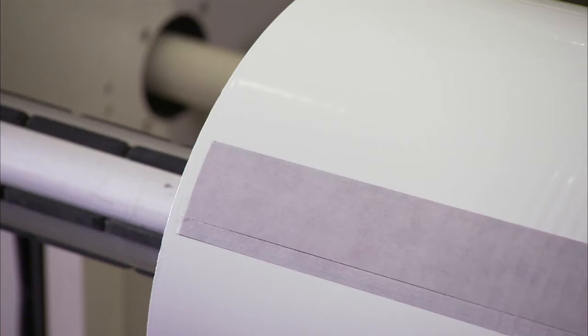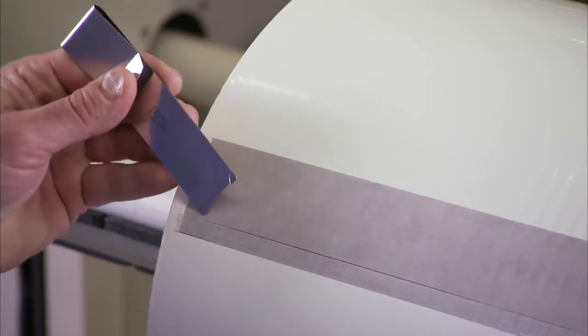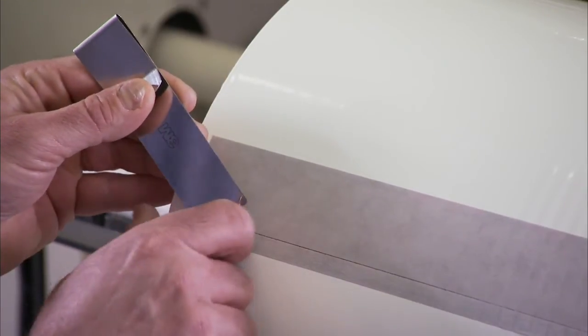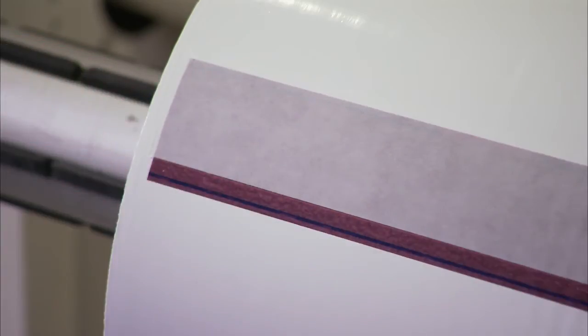To remove the lower liner, start about an inch in from the roll edge and from the center of the tape width, peel the lower liner off using a downward motion. Use a metal tape tool or your fingers to start the removal.